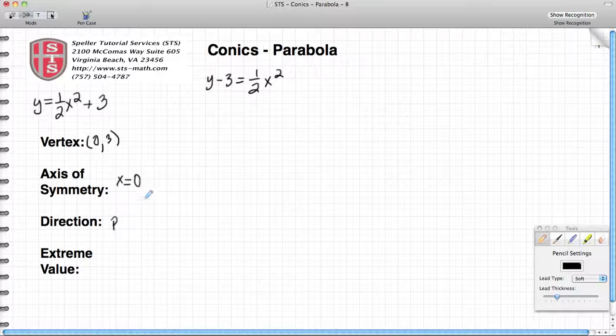The direction: we need to find out what the p value is. In this particular example the p value is greater than 0, the p value is 1 half. Being that it's greater than 0, that means the parabola opens in an upward position.